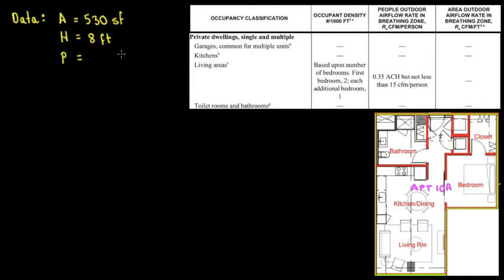So the number of people is going to be number of bedrooms plus one. So how many bedrooms do we see in this apartment unit layout? So when I'm talking about apartment unit layout, we're talking about this is a part of a building.